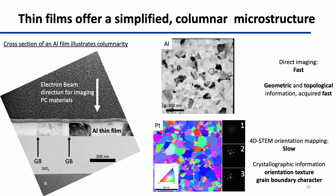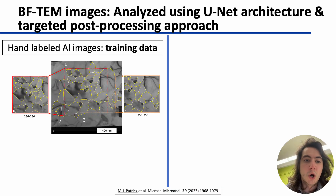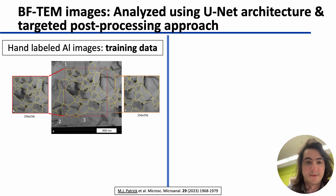But it comes with the cost that it's difficult to segment. It's hard to tell where one grain ends and one grain begins in regions of low contrast, or in regions where one grain might have contrast inside of it. Until recently, the only viable approach to measure these images has been hand tracing each and every grain boundary, but that's not practical when you have thousands of images from an in-situ experiment.